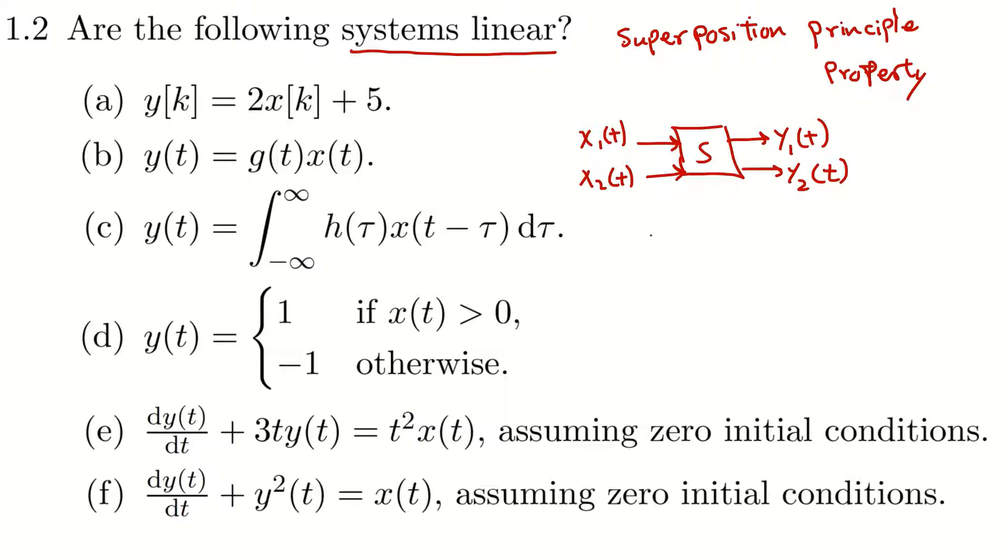So this system is linear if any combination of these inputs like alpha x1(t) plus beta x2(t), if we give this combination of the first and the second input to the system, then the system gives us an output like this.